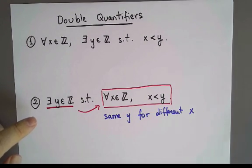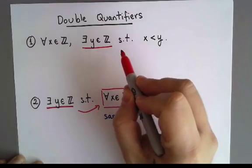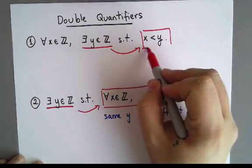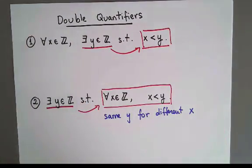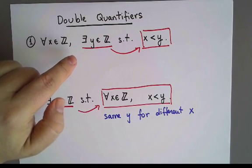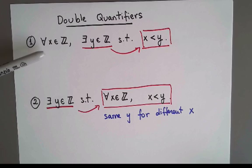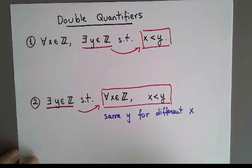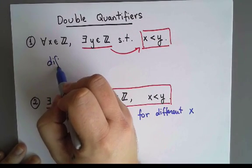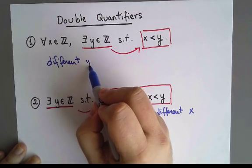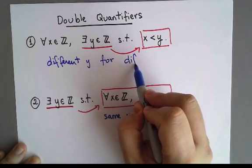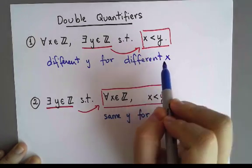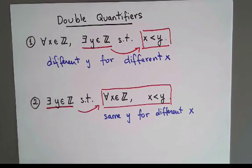On the other hand, in the first statement, there exists a y such that this is true, but before all of that I said 'for every x.' So when I say for every x there is a y, if I pick two different values of x, it's okay to pick two different values of y — one y for one x, a different y for a different x. So the first statement means we can use different y's for different x's. We don't have to, but it's okay to find different y's that work for different x's.